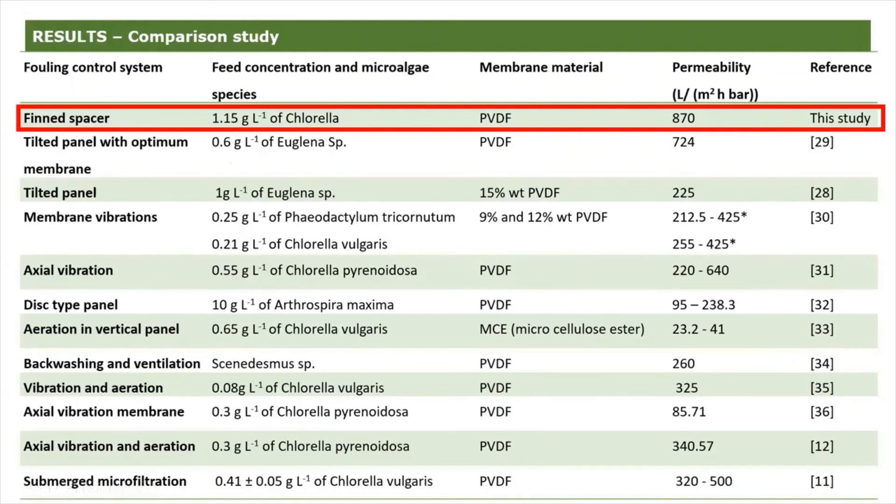We tried to compare what we achieved with this filtration, and as you can see here, there are so many different types of ways to control fouling for microalgae, and our result was actually the highest reported in literature with a steady state permeability of close to 900 liter per square meter per hour per bar.